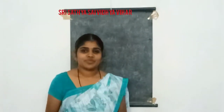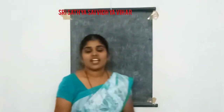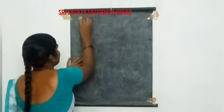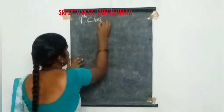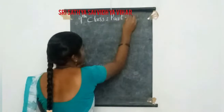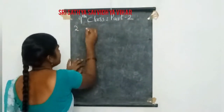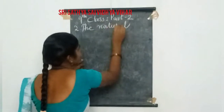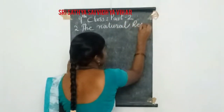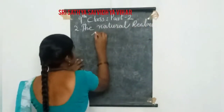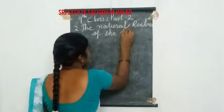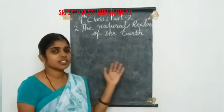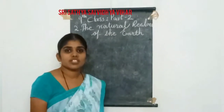Welcome 9th class students. In the last class we completed part 1 of the second lesson. Now in part 2 we are covering the natural range of the earth. The natural range means the landforms, the surface, the terrain of the earth is divided into some parts and every part has a particular name.